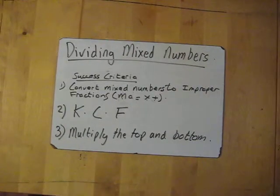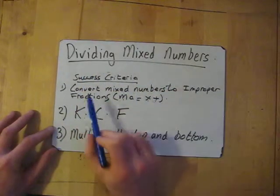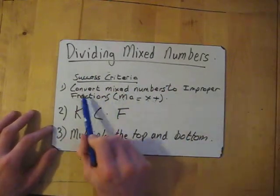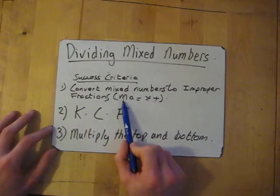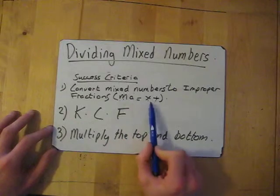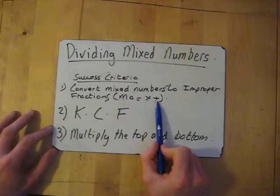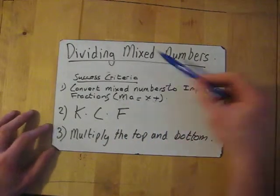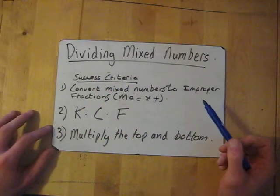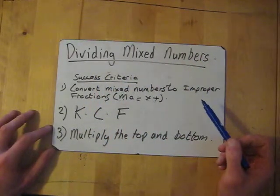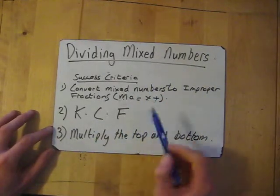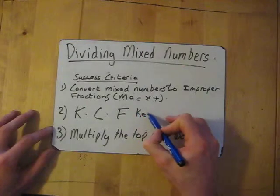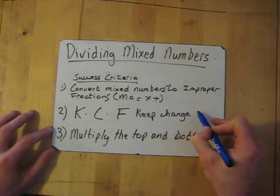Now we're going to look at dividing mixed numbers. The success criteria: first, we need to convert the mixed numbers to improper fractions. We'll ask our MA for help — MA stands for multiply and add. Then, because it's dividing fractions, we go back to the rule for dividing simple fractions: KCF, which stands for keep, change, and flip.